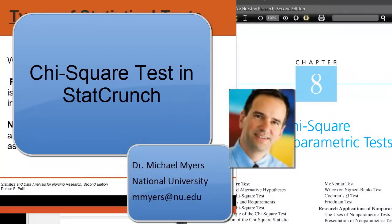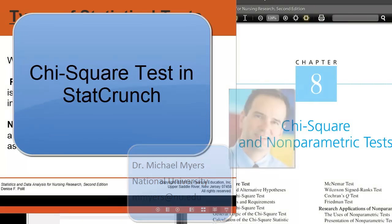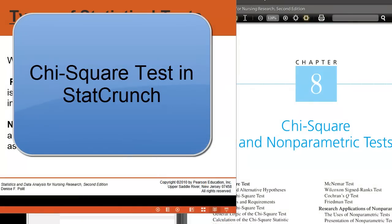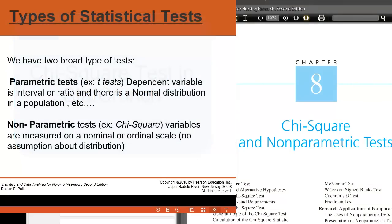Hello, this is Dr. Michael Myers, Associate Professor in Health Sciences at National University in San Diego, California. In this short presentation, I'm going to show you how to conduct a chi-square analysis on some simple data sets.